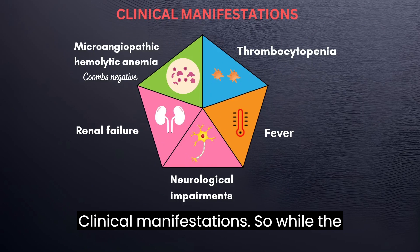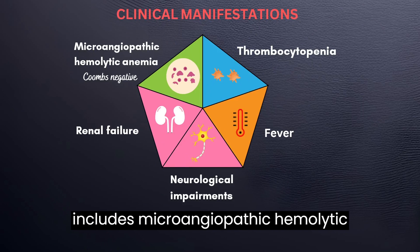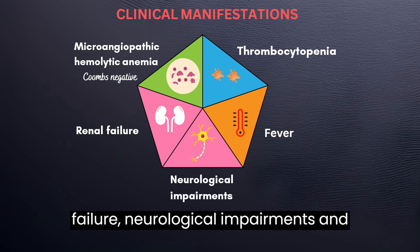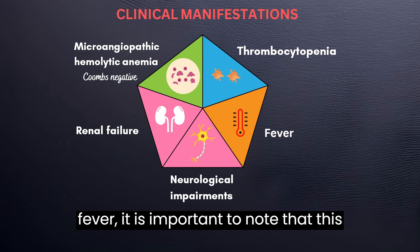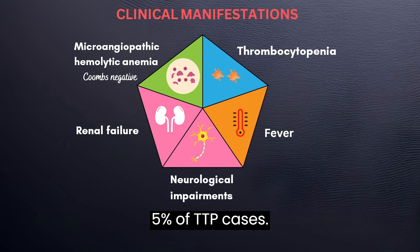Regarding clinical manifestations, the classic pentad of symptoms in TTP includes microangiopathic hemolytic anemia, thrombocytopenia, renal failure, neurological impairments, and fever. However, it is important to note that this classic pentad presentation is seen in less than 5% of TTP cases.